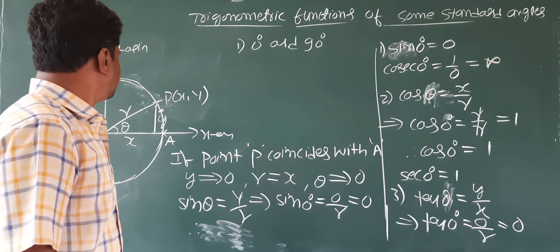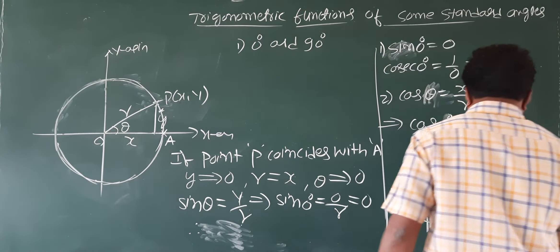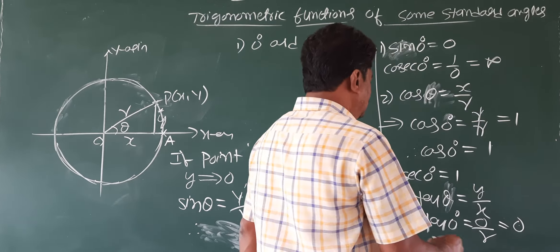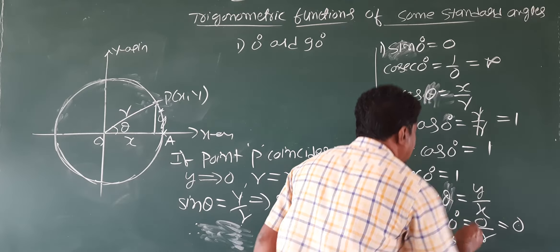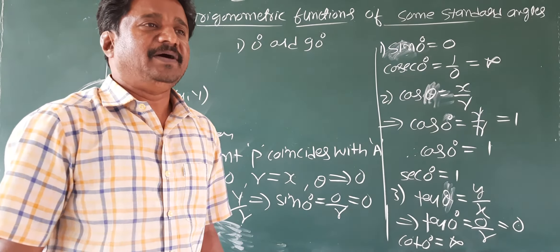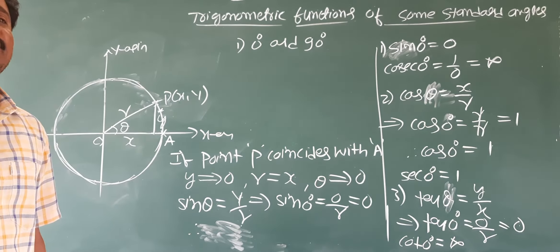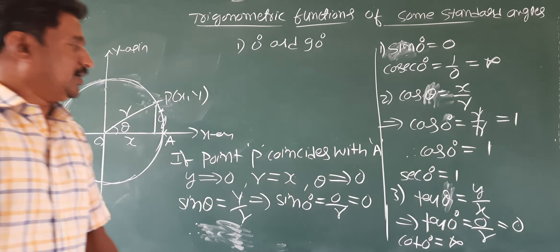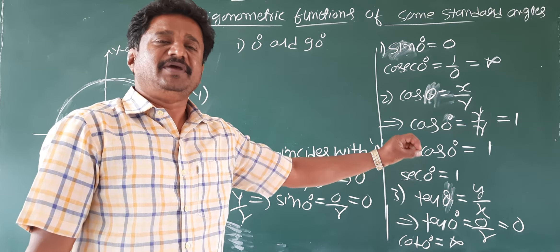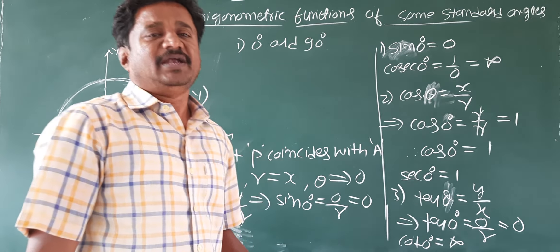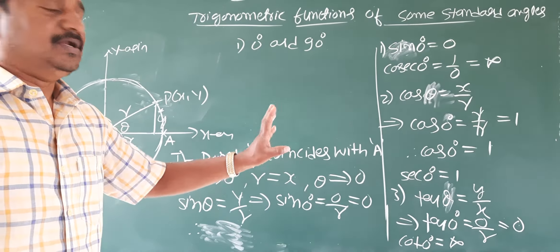Cot 0 degree: reciprocal of tan is cot. Tan 0 degree is 0, so cot 0 degree is 1 by 0, which is not defined. We write it as infinity. So cot 0 degree is not defined, or infinity.